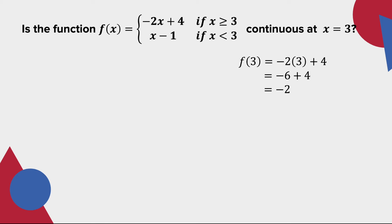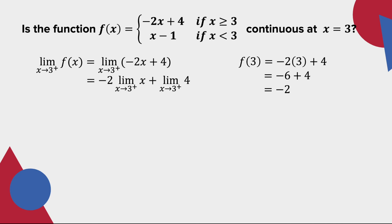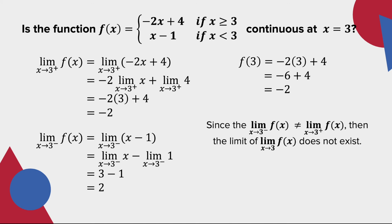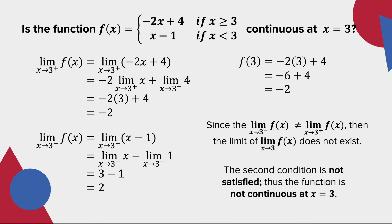Now let's solve for the limit of the function. Let's start with the right-hand limit. The right-hand limit of the function is equal to negative 2. On the other hand, the left-hand limit of the function is equal to positive 2. Since the left-hand limit is not equal to the right-hand limit, then the limit of the function does not exist. Since the second condition is not satisfied, then the function is not continuous at x is equal to 3.